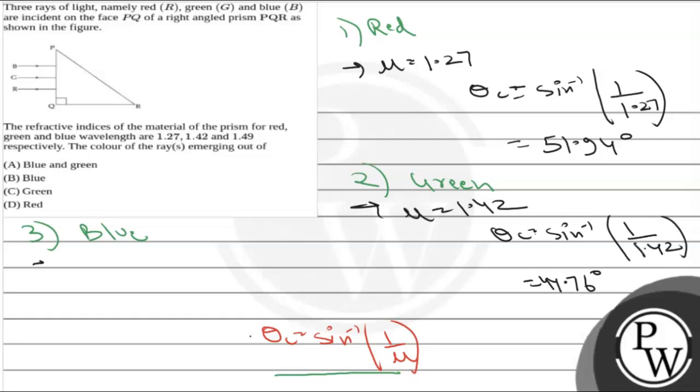And if we see the third color, it is blue. Its refractive index is given as n equals 1.49, so theta c will be equal to sin inverse of 1 upon 1.49. So theta c will come out to be 42.15 degrees.